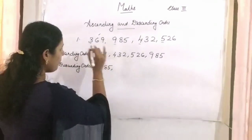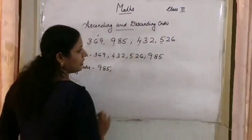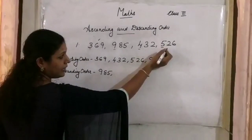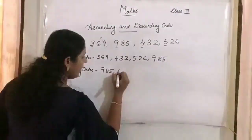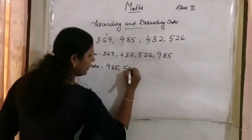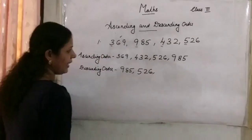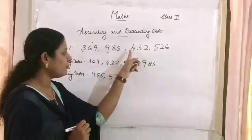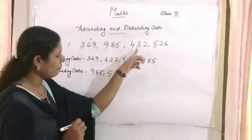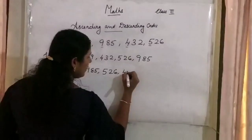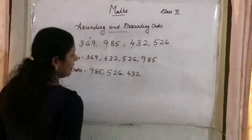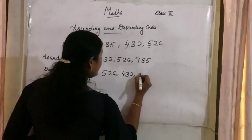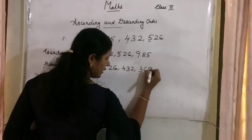Next, from the remaining hundreds digits 3, 4, and 5, which is the higher one? 5. So we write 526 in the second place. Then comparing 3 and 4, 4 is the bigger one, so 432 goes in the third place. And the last place is 369.